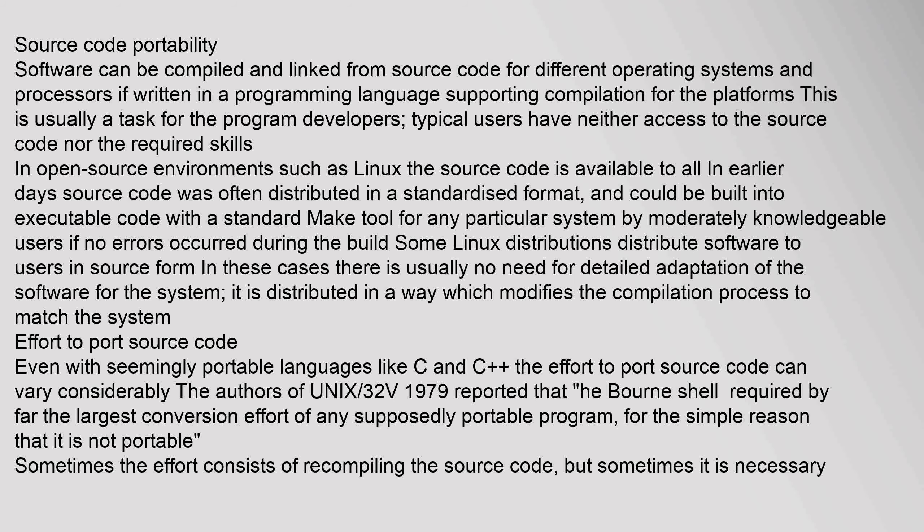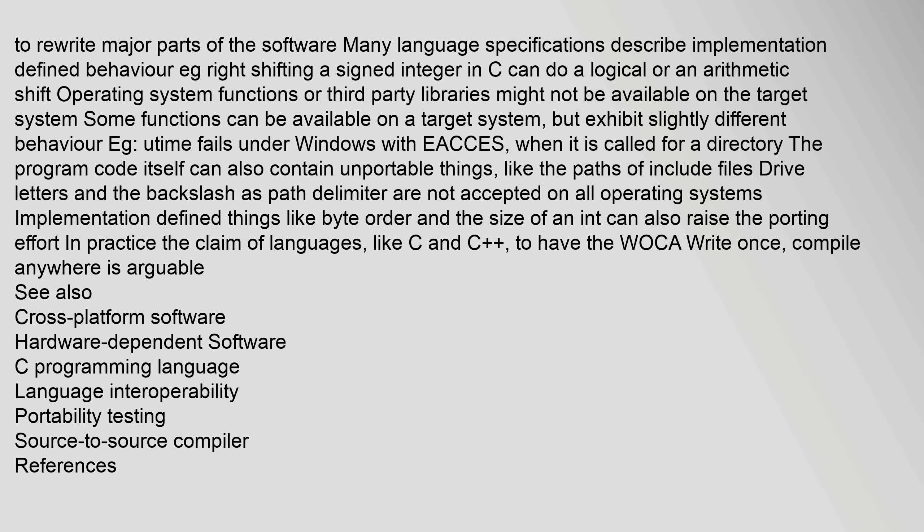Even with seemingly portable languages like C and C++, the effort to port source code can vary considerably. The authors of Unix (32V, 1979) reported that the Bourne shell required by far the largest conversion effort of any supposedly portable program, for the simple reason that it is not portable. Sometimes the effort consists only of recompiling the source code, but sometimes it is necessary to rewrite major parts of the software.